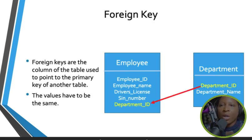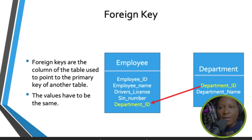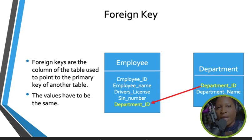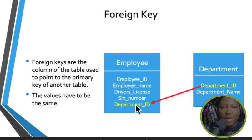Foreign keys are columns of a table used to point to the primary key in another table. For example, in an employee table you have a foreign key called department ID, and in the department table you have the primary key department ID. When you place a primary key from one table into another, it becomes a foreign key. The values for department ID must be the same in both tables.